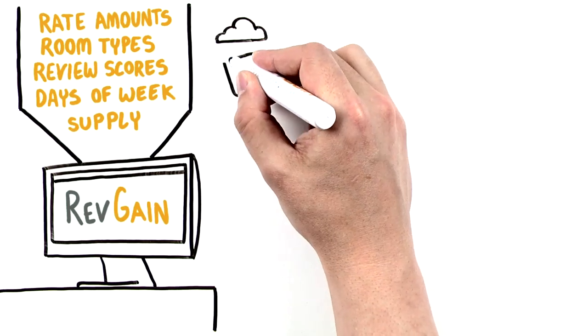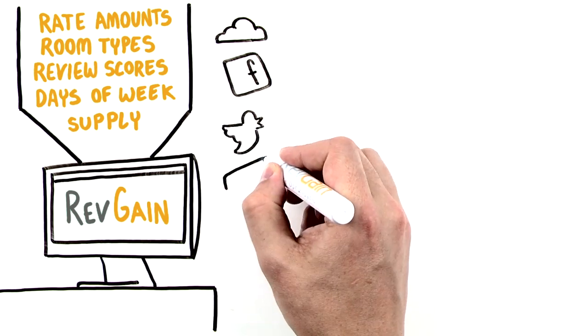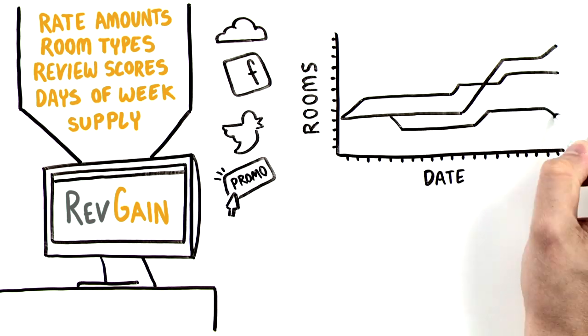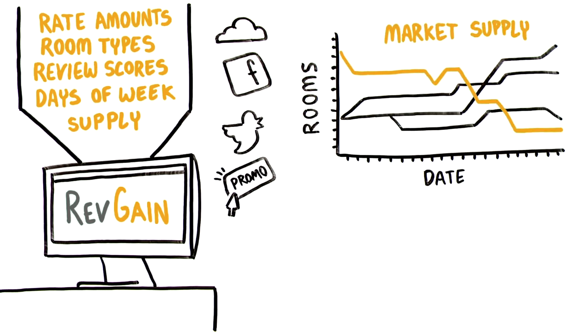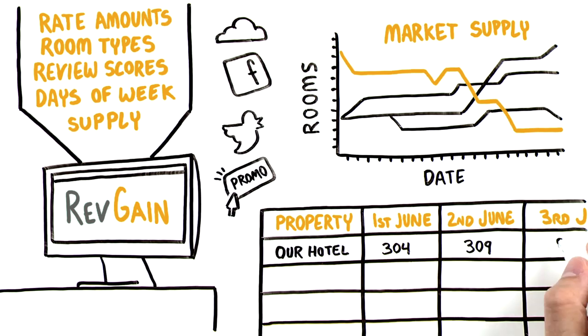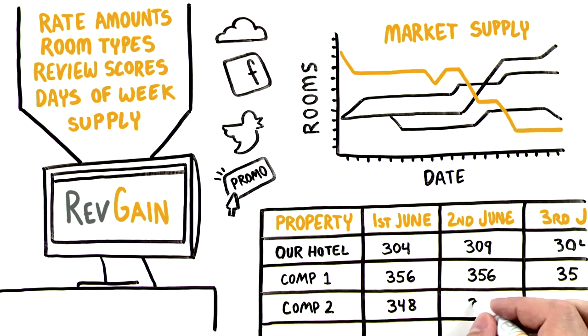Revgain uses multiple data sources to build a benchmark comparison of the hotels you compete with. We track rate trends for the future, indicating which way the market is moving. We also track when the room supply is constrained. These trends and changes build a complete picture of the current market.